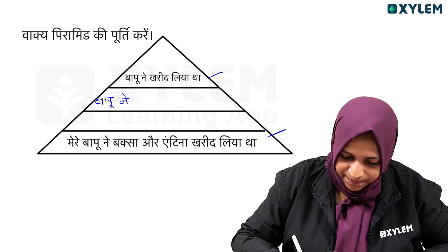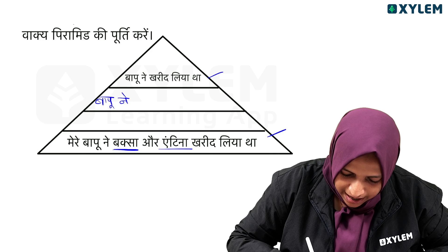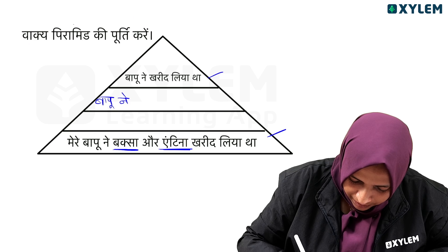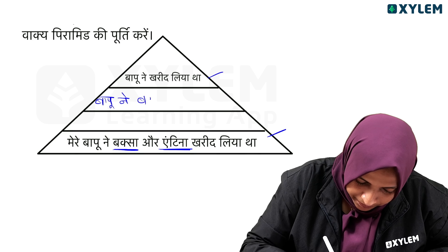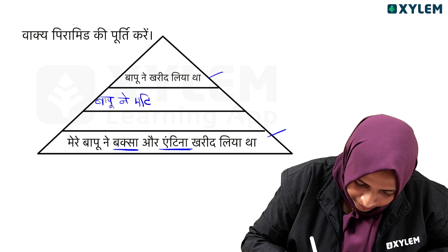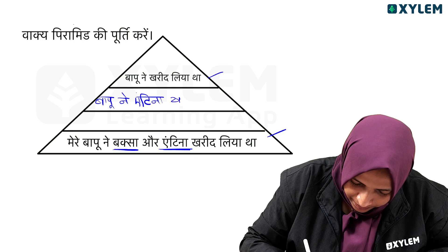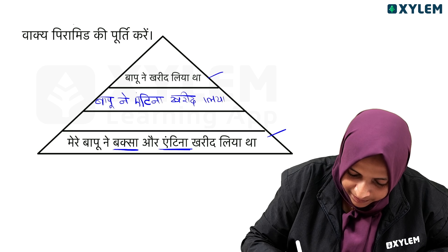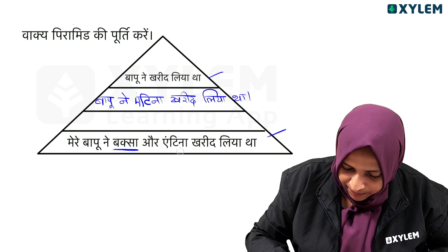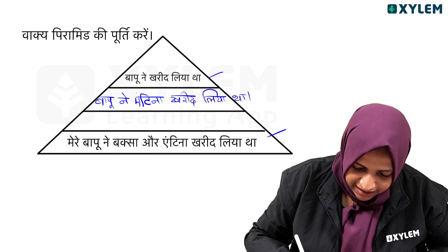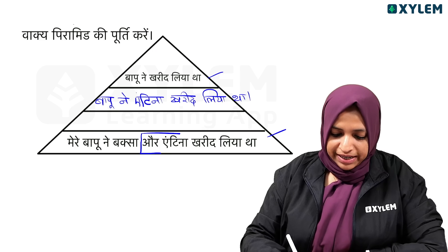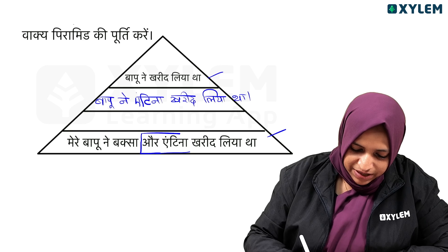What is the shape of the pyramid? We have the same one. In the end of the sentence, if we have a sentence in the end of the sentence, we will start the first sentence in the end of the sentence, then we will continue.